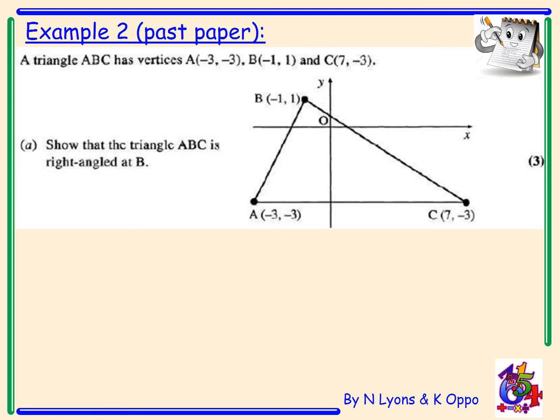Let's try another example. Example two is from a past paper. Now this is useful because in this example they've drawn a diagram to help me visualize the problems. It says a triangle ABC has vertices A negative 3 negative 3, B minus 1 1 and C 7 negative 3. Part A of the question is worth three marks. It says show that the triangle ABC is right angled at B. What it really is asking you is that AB is perpendicular to the line BC and you have to prove this.